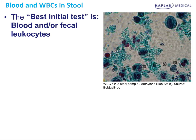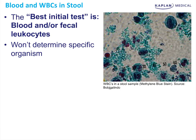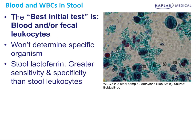The best initial test is blood or fecal leukocytes. If they don't tell you there's blood in the stool, look for occult blood with the stool guaiac test. If they don't mention visible blood, do the fecal leukocytes. It won't identify a specific organism, but it tells you you're in the Salmonella, Shigella, Yersinia, E. coli, Vibrio vulnificus, Vibrio parahemolyticus group.